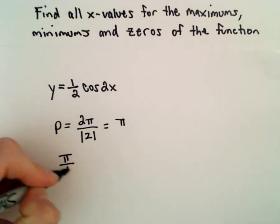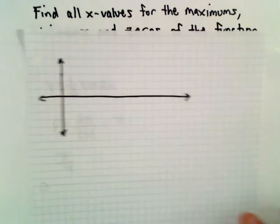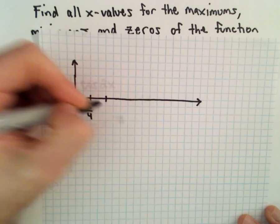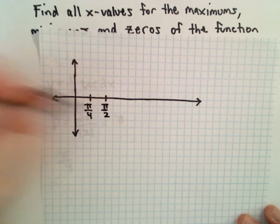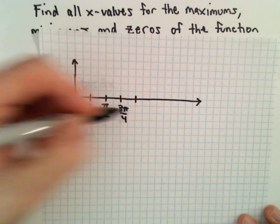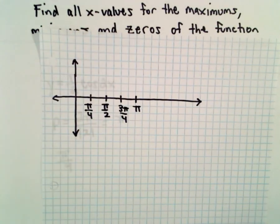I divide that by 4 to get my increments. There's π/4, 2π/4 which will be π/2, 3π/4, and then we'll be at 4π/4, or π.